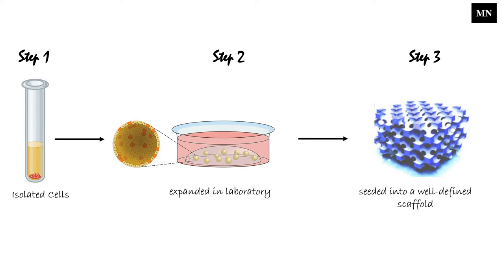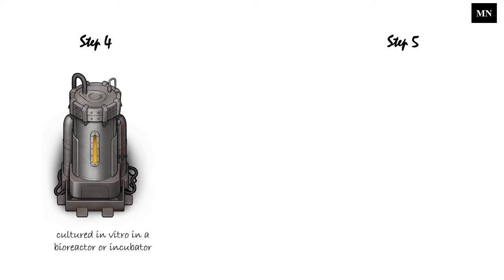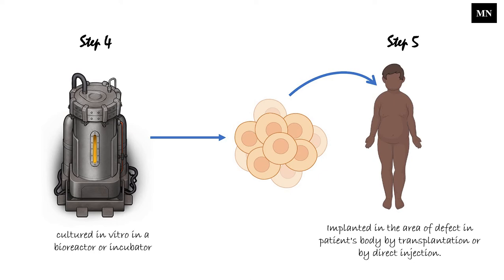The nature of the scaffold depends on tissue type — it can be porous or injectable. In the fourth step, the cells are further cultured in vitro in a bioreactor or incubator. In the fifth and final step, when the construct is matured enough, it can be implanted in the area of defect in the patient's body either by transplantation, like surgery, or by direct injection.